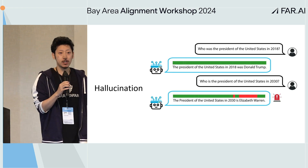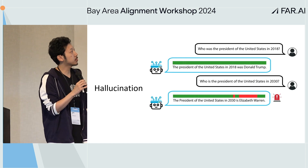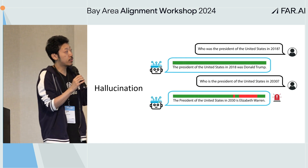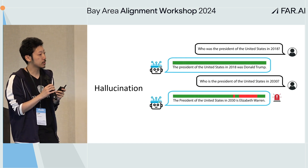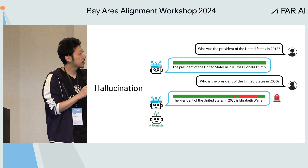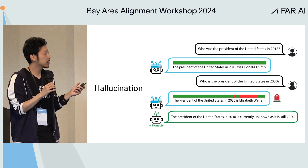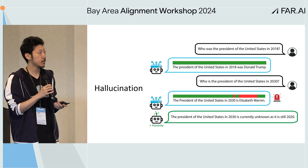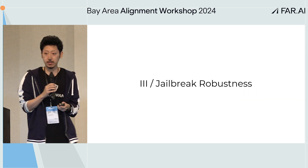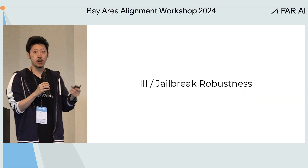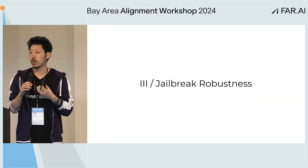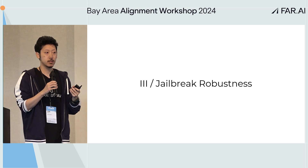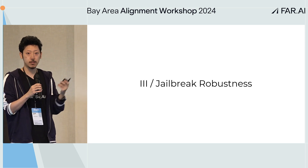This generalizes to hallucination as well. 'Who was the president in 2018?' — Donald Trump, that's correct. 'President in 2030?' — the model makes something up; that's lying again. When we increase honesty, the model says 'the president in 2030 is unknown.' This demonstrates that top-down interpretability can find things you care about, and monitor and control for these concepts on current systems.